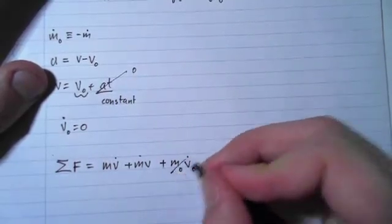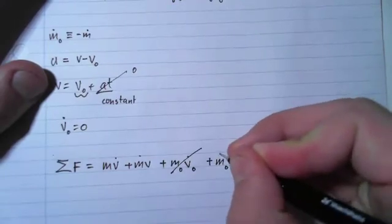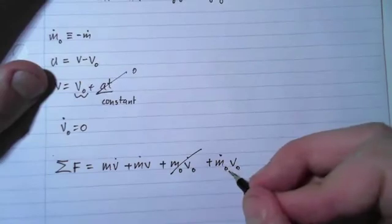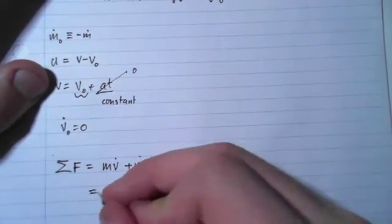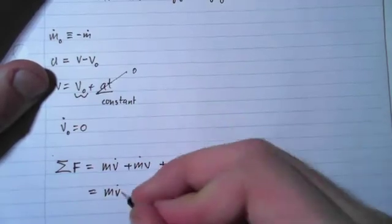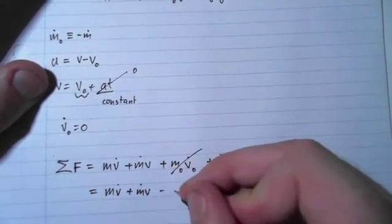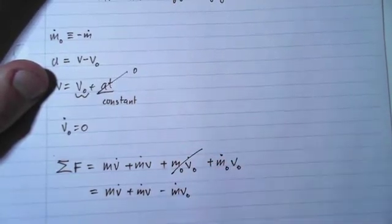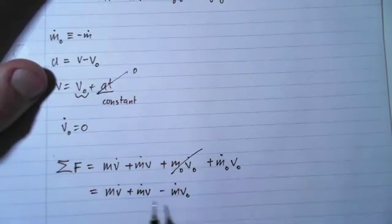Because the v₀ dot is zero, we can cancel this term out. And we know that this m₀ dot is negative m dot, so this then becomes mv dot minus m dot v₀. We also can factorize this v minus v₀ out because it has m dot as a common term.